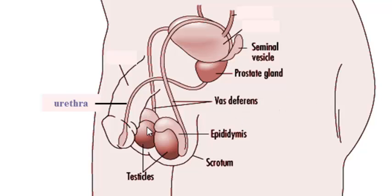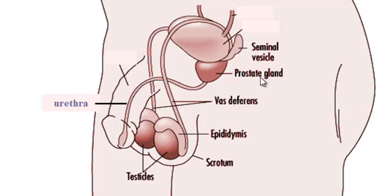Let's start with the testicles at the bottom, also called the testes. Covering them like little caps would be the epididymis, one on each side. Leading from that is a tube called the vas deferens. Then it will pass by the seminal vesicle and the prostate gland — you do not need to worry about labeling those two. Finally, it will leave out of the body through the urethra.